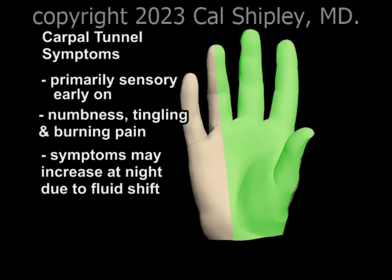These symptoms are often increased at night due to the fluid shift that occurs from the lower half of the body to the upper half of the body when laying in a horizontal position for several hours. An overall increase in upper body fluid levels at night results in increased fluid within the carpal tunnel and greater compression of the median nerve.